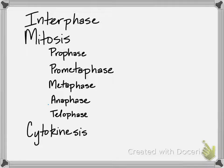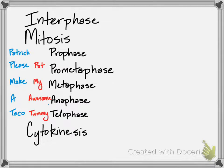You can remember these steps with acronyms. One of them is 'Please Make A Taco,' and we need to add a word for the fifth phase — so you could say 'Patrick, Please Make A Taco.' Another, really silly one that's stuck around, is 'Pat My Awesome Tummy,' giving us 'Please Pat My Awesome Tummy,' which blends nicely into the five steps.